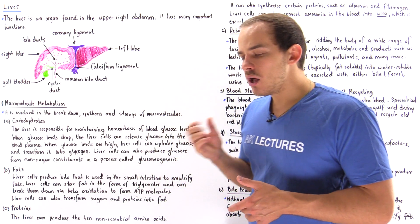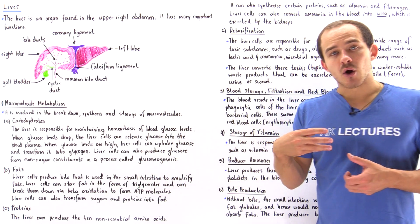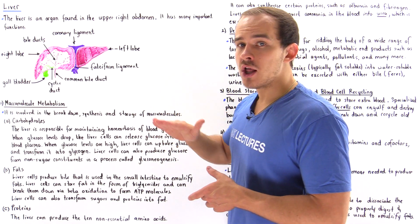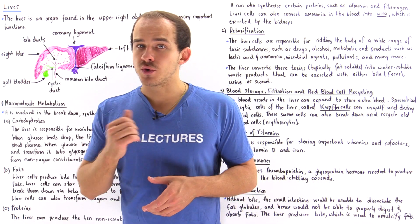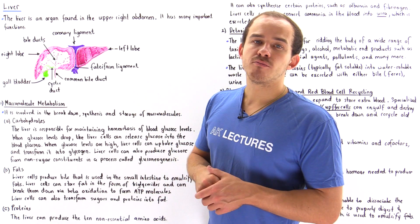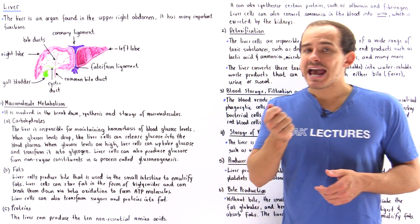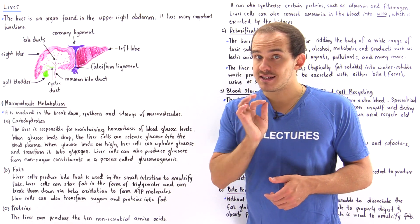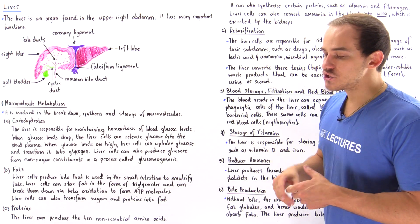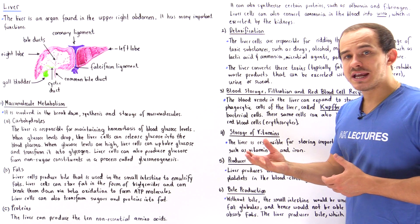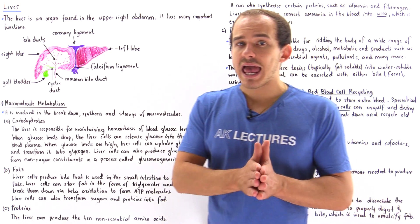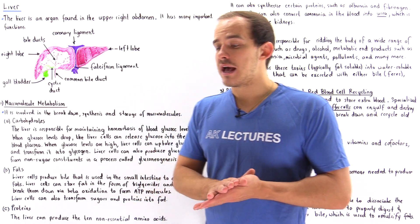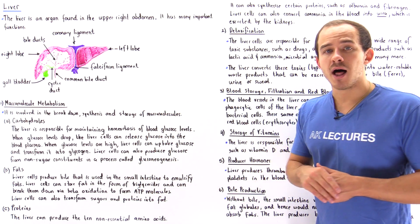On the other hand, if our glucose concentration inside the blood is very low, the pancreas releases a hormone known as glucagon. Glucagon acts on liver cells and stimulates them to break down glycogen into glucose and release that glucose into the blood, maintaining a proper level of glucose.